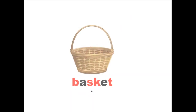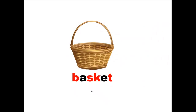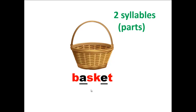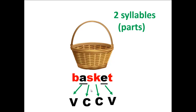Another example: basket. How many vowel sounds? Two vowel sounds. So this word is made up of two syllables or two parts. Let's check the pattern of the vowel and consonant sounds in the word, starting with the first vowel sound. Then consonant, consonant, and then a vowel sound. So this word follows the VCCV pattern or order.